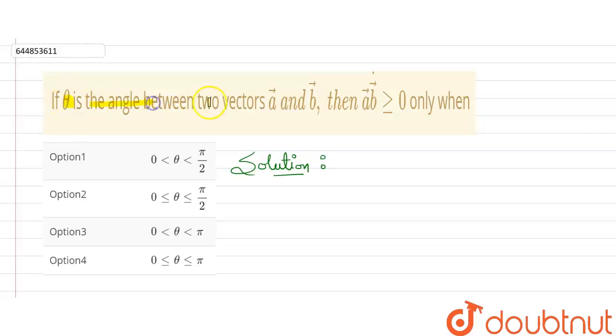If theta is the angle between two vectors a and b, and it is also given that dot product of a and b vector is greater than and equals to zero. The condition is asked: when is this condition satisfied? So first, let's write this condition here: a dot b vector is greater than and equals to zero.